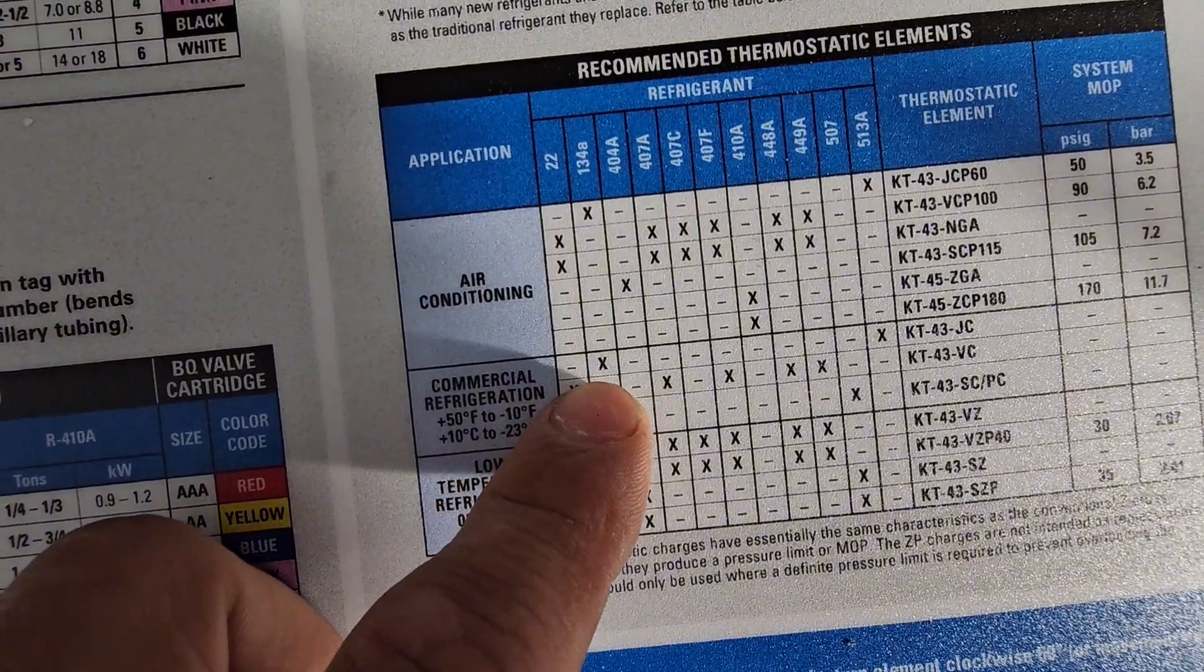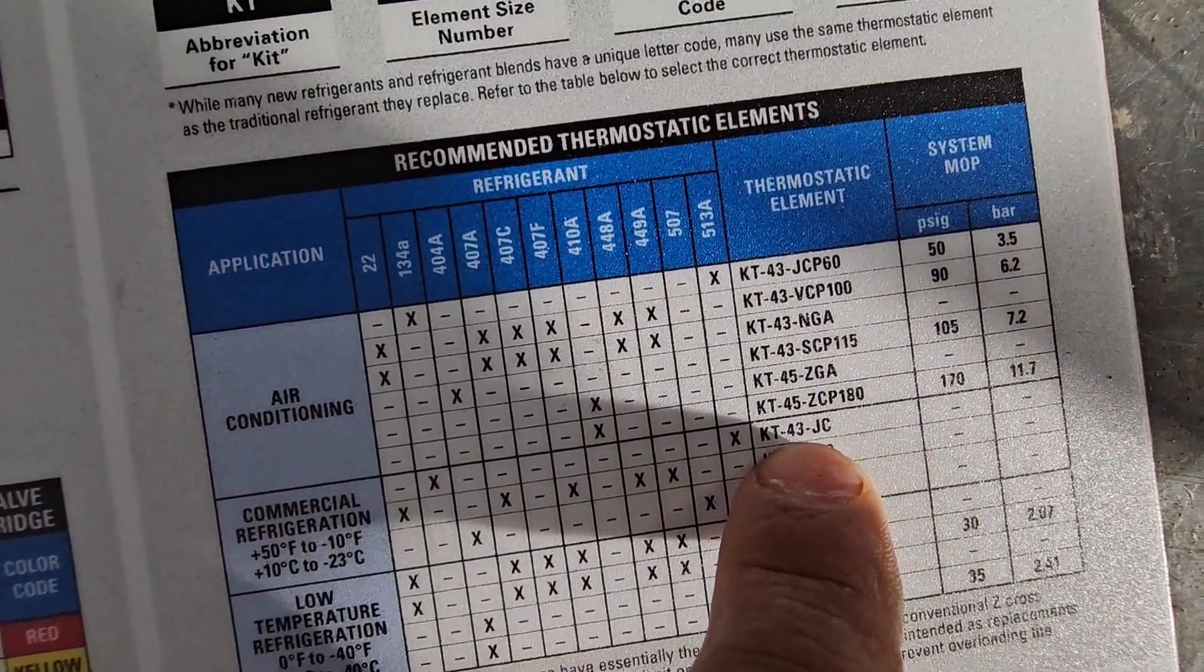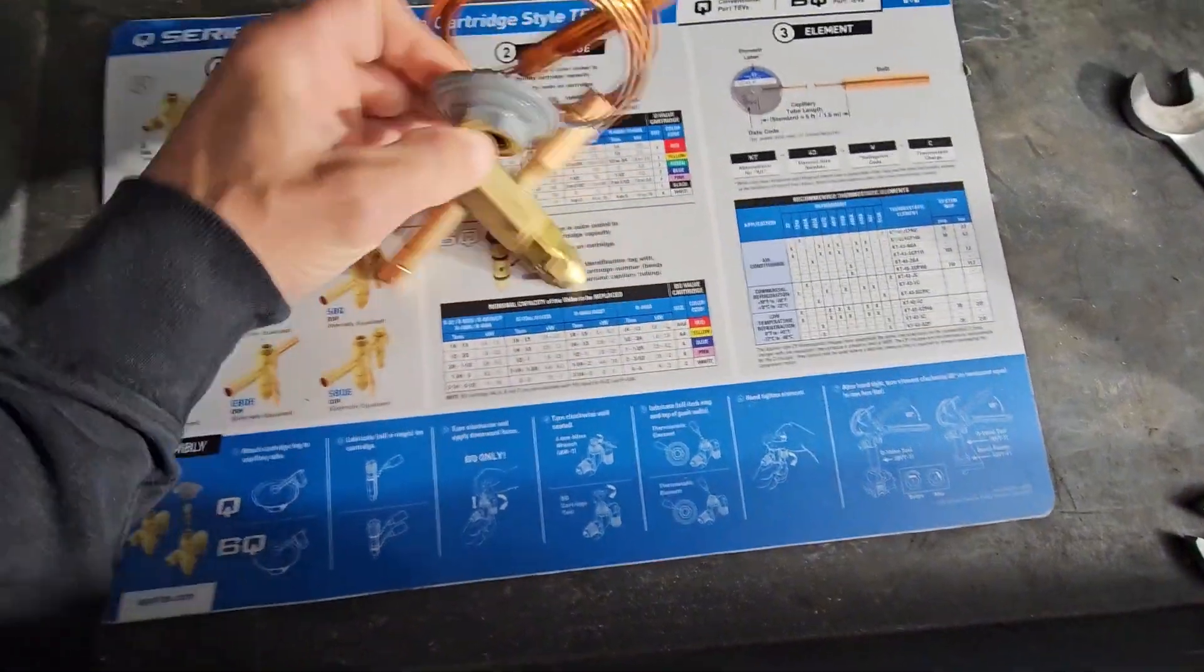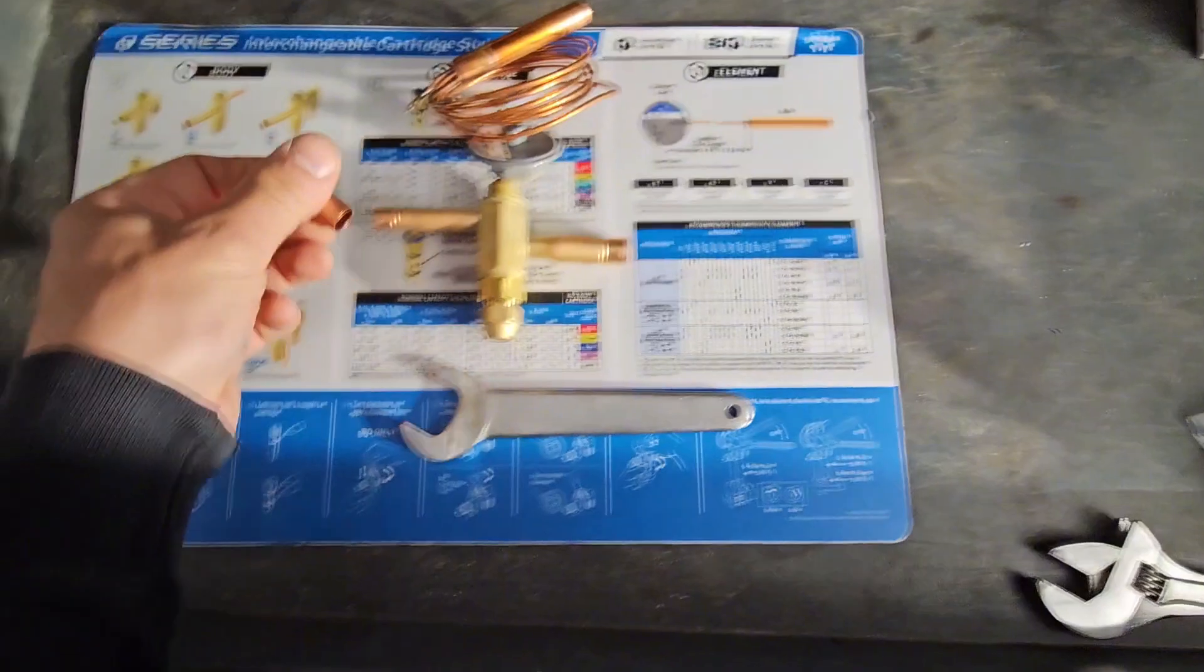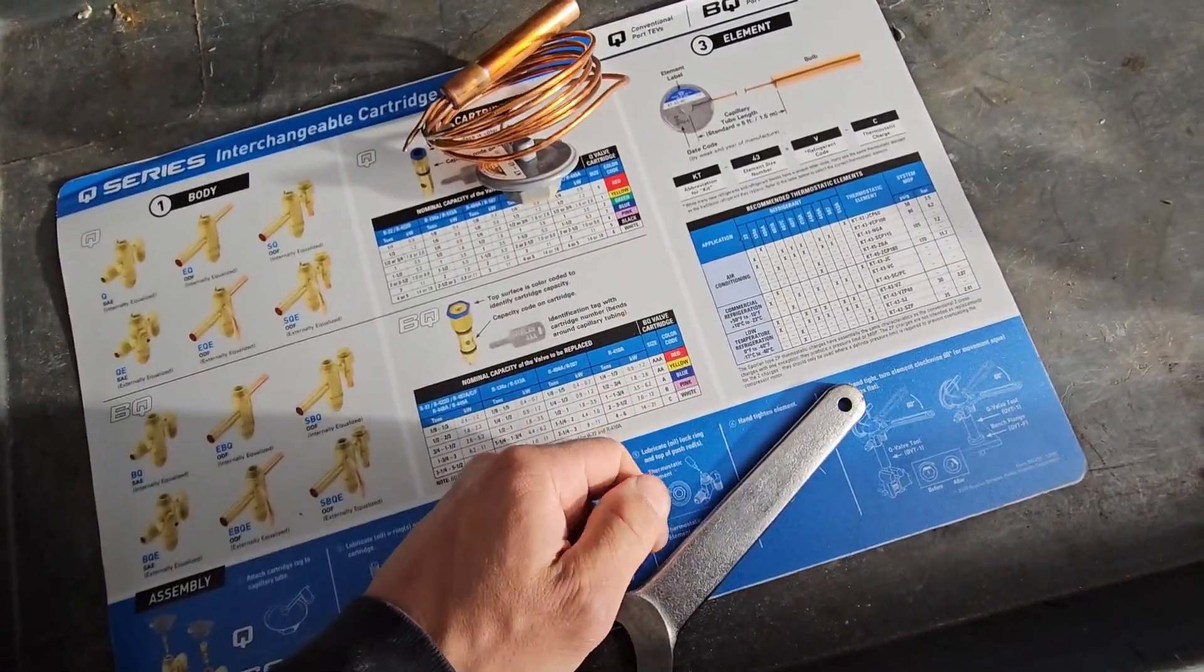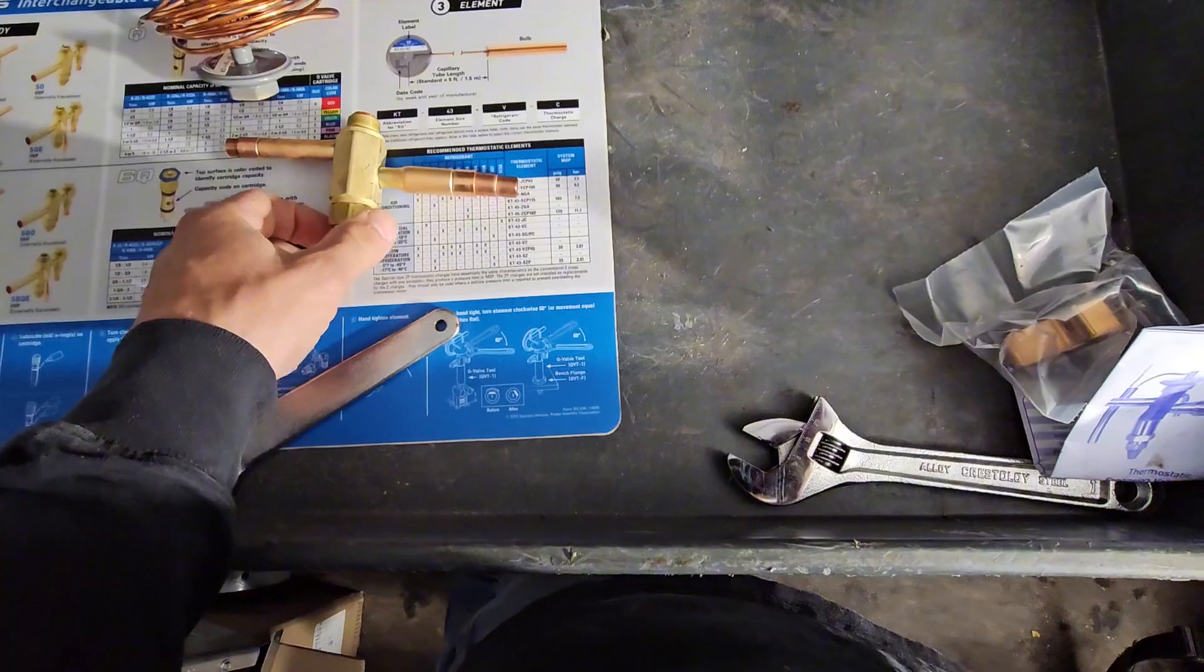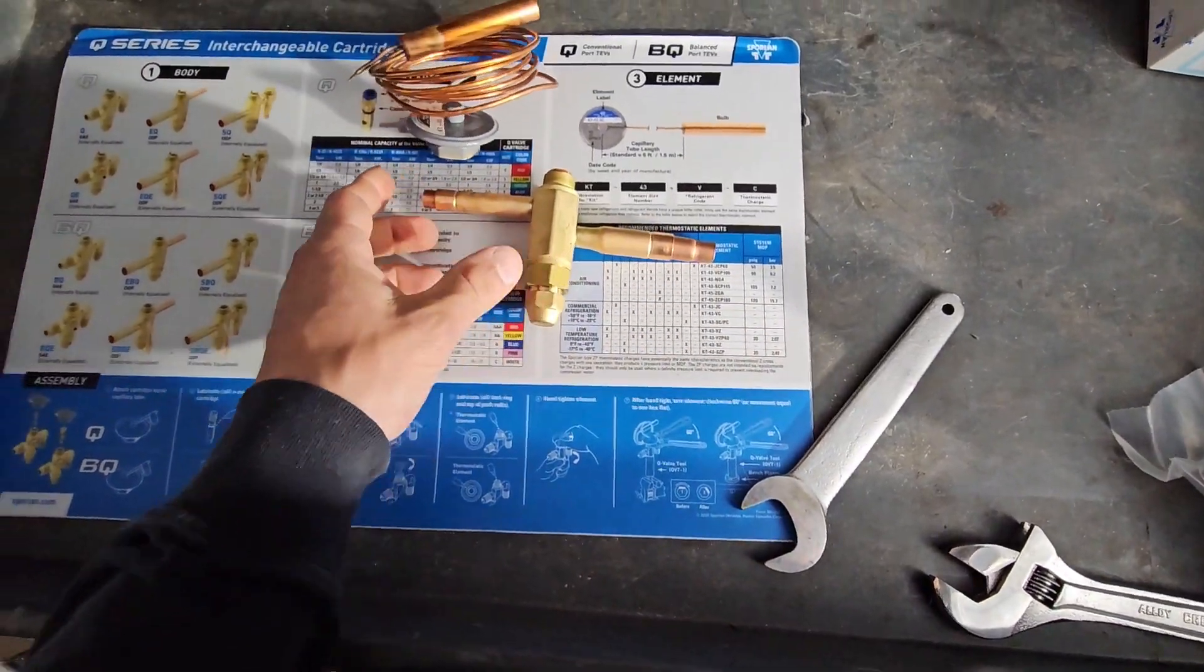So basically we're doing commercial refrigeration and we're using 134a, we want to use a KT43JC, which is what we have here. And that's pretty much it. So I can't screw this on with the camera in my hand, so I'm gonna screw on my power element, I'm going to put my reducer on my outlet, I'm gonna put my reducer on my inlet, and I'm already gonna rough in this valve into this coil.